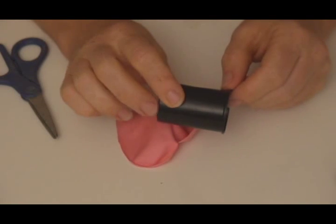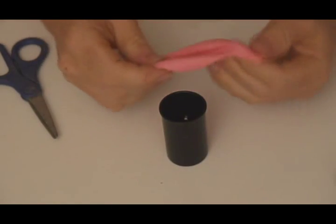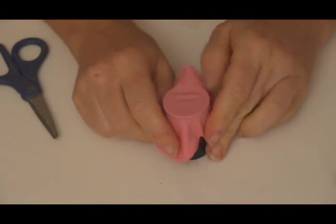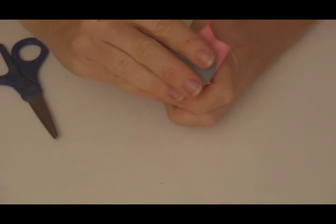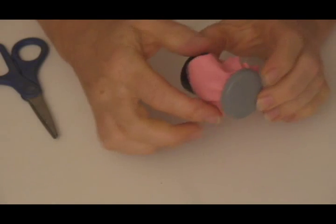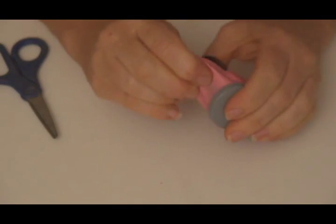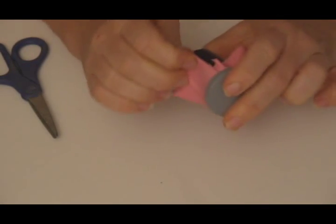You're going to take your film canister and on the end that's open, you're going to place the balloon and then put the lid on. Make sure there's balloon coming out of all around it and you want to make sure you've got it pulled as tight as you can before you put the lid on. You want this to look like a drum head, nice and tight.